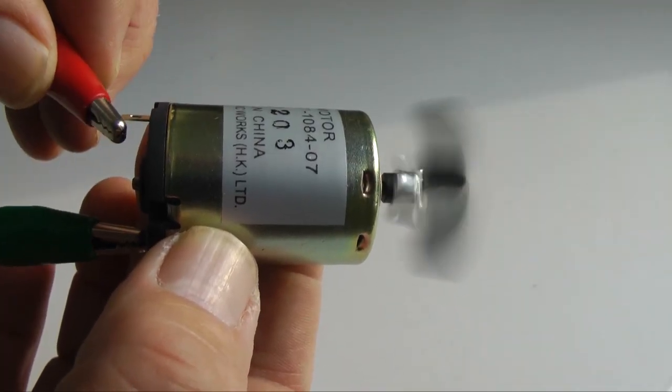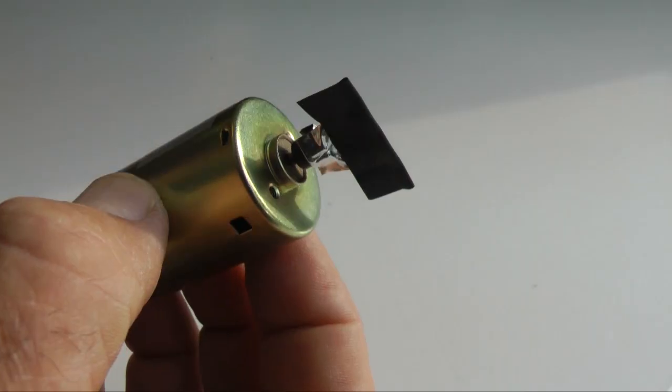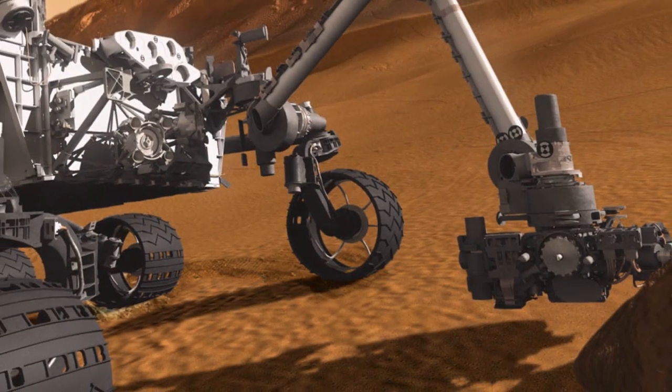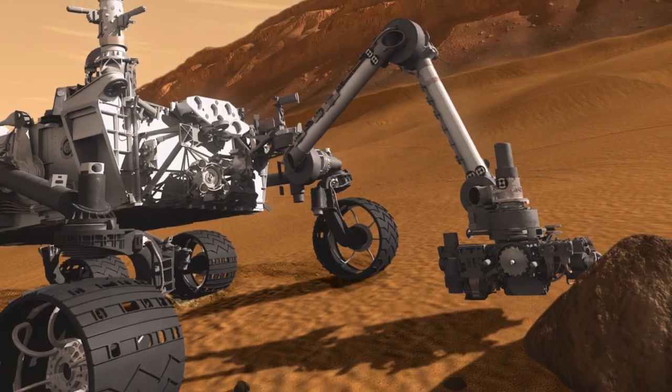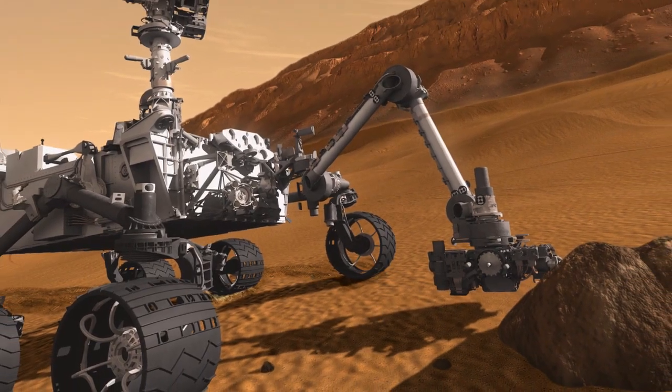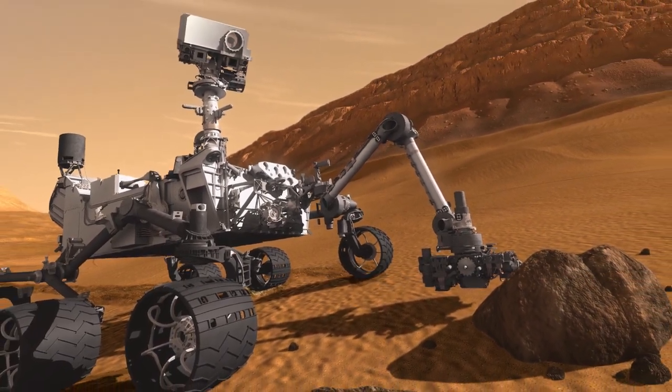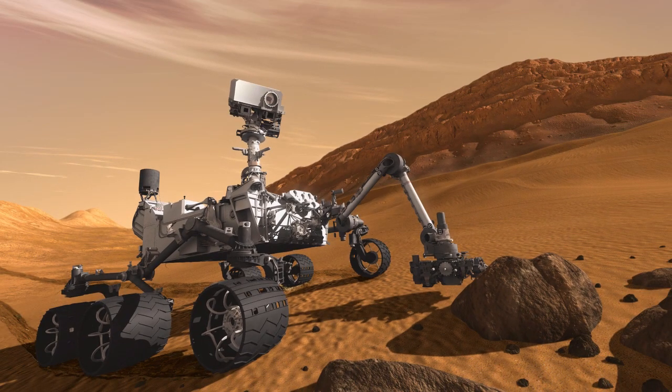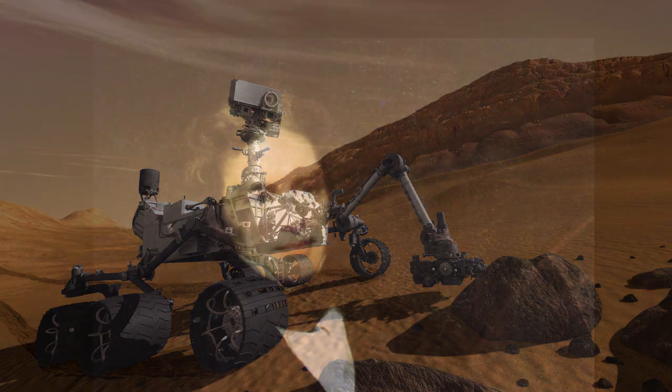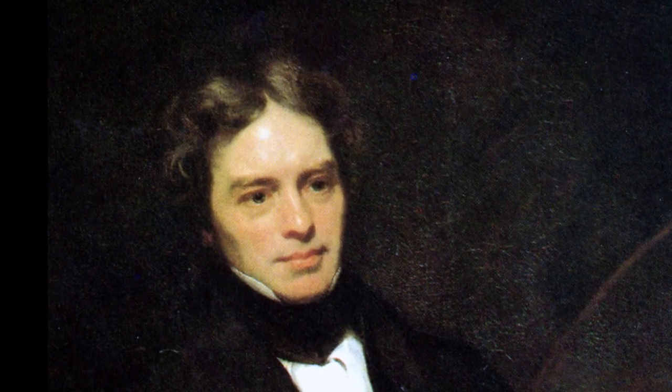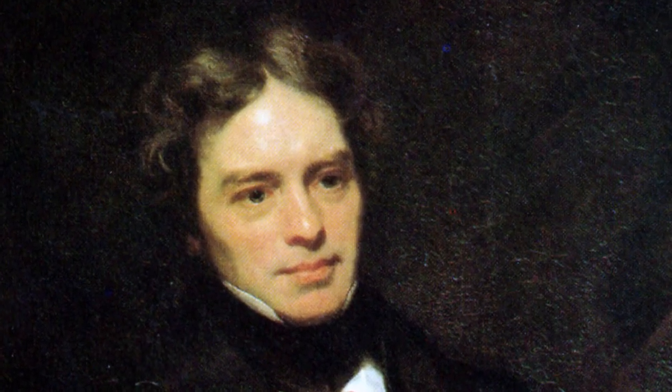One of the more exotic uses of electric motors can be found in the motors enabling Curiosity, NASA's rover. Moving with electric motors, this sophisticated robot is travelling across the surface of Mars. Faraday would be amazed to see how far his discoveries about the relationship between electricity and magnetism have taken us.